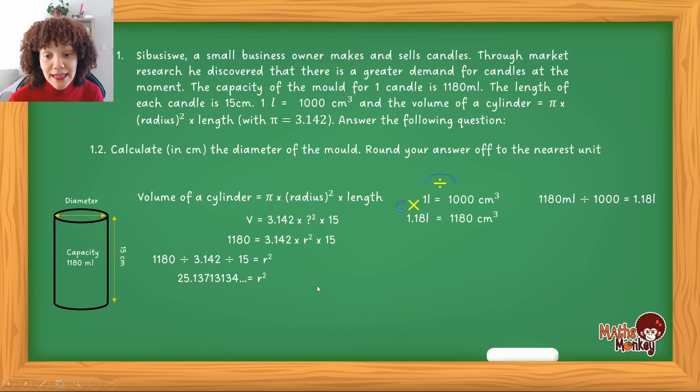So in order for me to find the radius, because this is radius squared, so this is radius times radius, in order for me to find what the actual radius is, I have to square root this. And that's when I get my actual radius answer of 5.003.